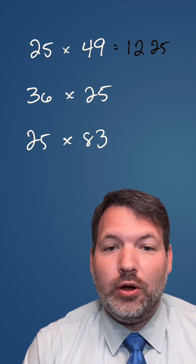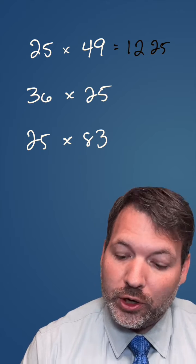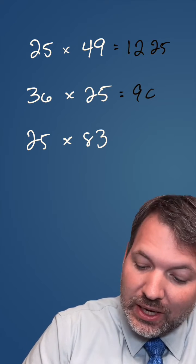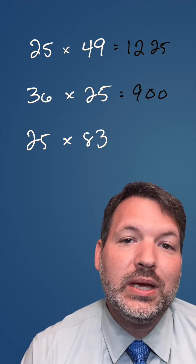When we don't have a remainder at all, for example, 36 times 25, we're just going to end our product in two zeros. Four goes into 36 nine times, again there is no remainder, and so 36 times 25 is simply 900.